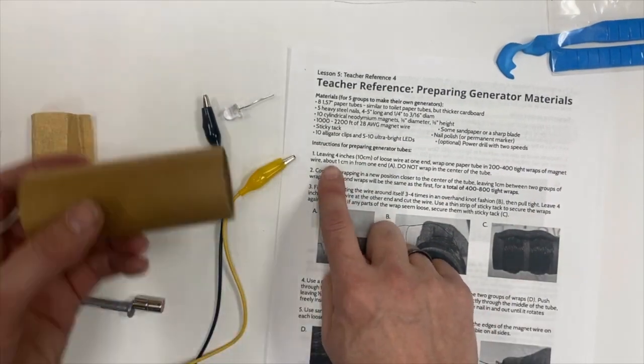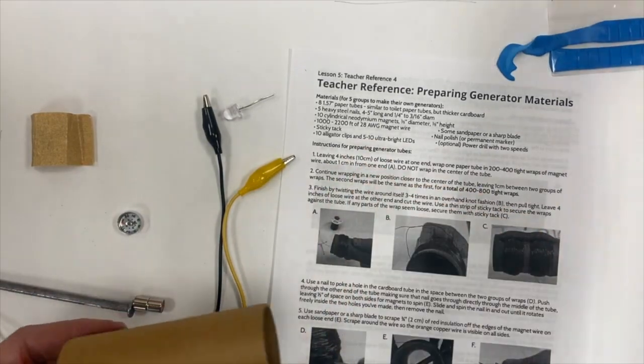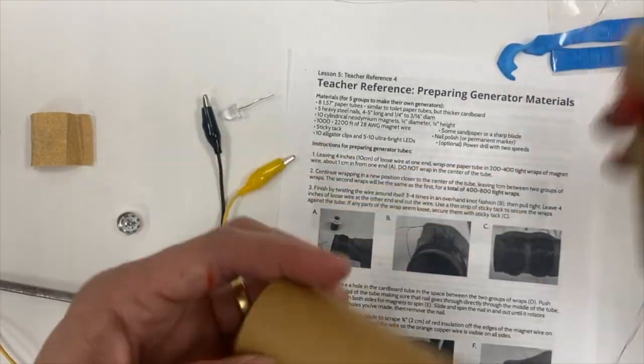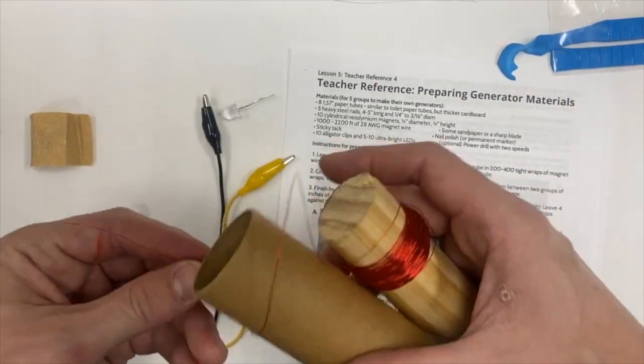I'm going to start off leaving four inches of loose wire. I'm going to start wrapping some of this wire around the tube.